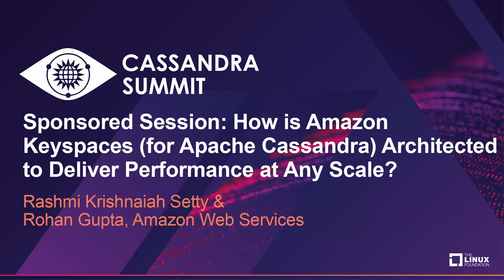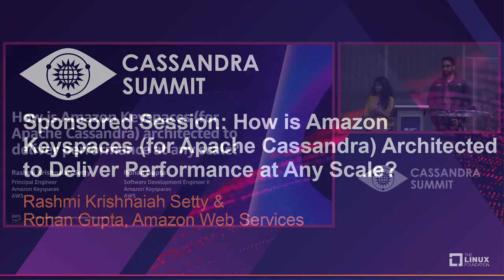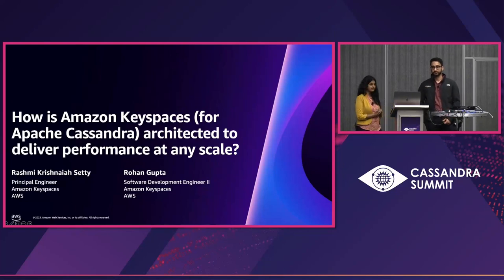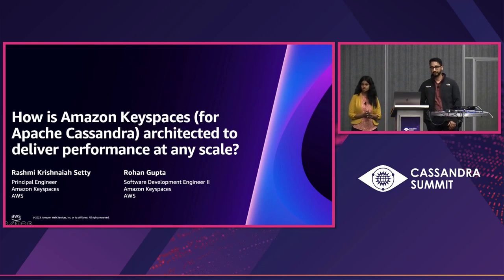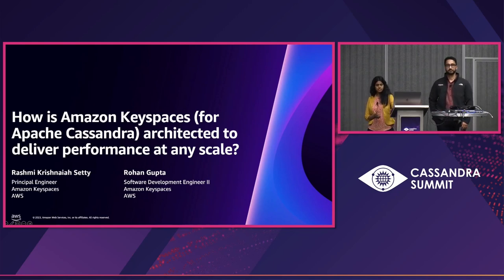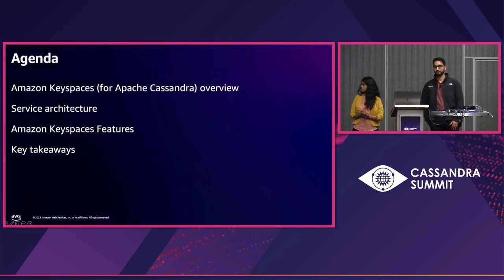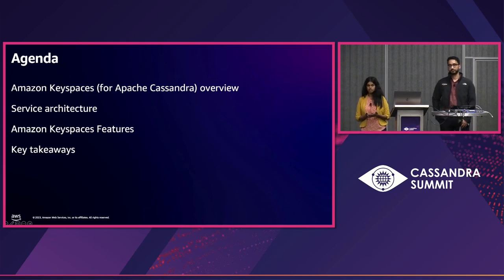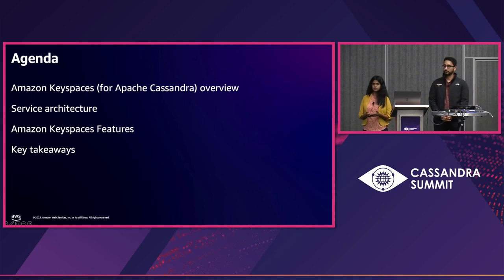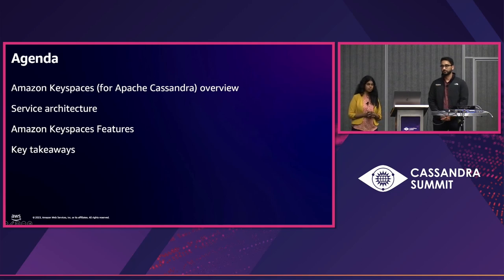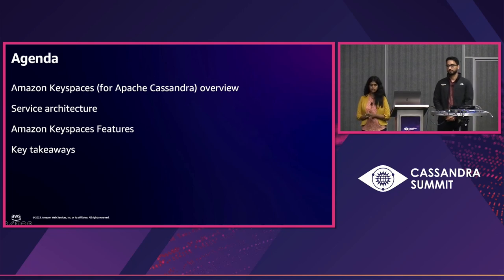Hello everyone, thanks for coming in. I'm Rashmi Krishna Sati, a principal engineer working with Amazon Keyspaces. Joining me today is Rohan Gupta, who is the other engineer working with Amazon Keyspaces for Apache Cassandra. Today we'll start with an overview of Amazon Keyspaces, how we built it, and how we architected it to be highly scalable and highly available. We'll also talk about its features, and Rohan will discuss how they were built to provide a seamless customer experience.